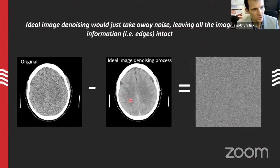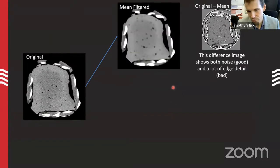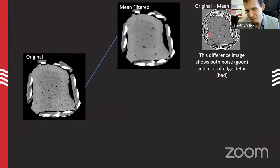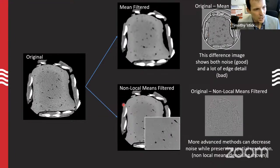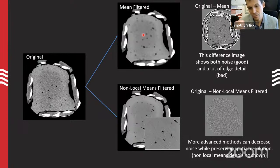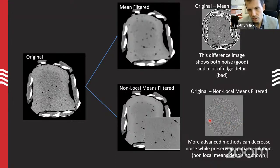In an ideal denoising scenario, we'd take a noisy image, denoise it, and the subtraction would give us just noise — no signal. In the real world that's nearly impossible. A simple mean filtration reduces noise standard deviation a lot, but when you look at a difference image, there's a ton of signal lost — all edge detail gone. Non-local means filtration is smarter: instead of averaging all neighboring pixels, it looks for pixels similar to the current one and averages only those.